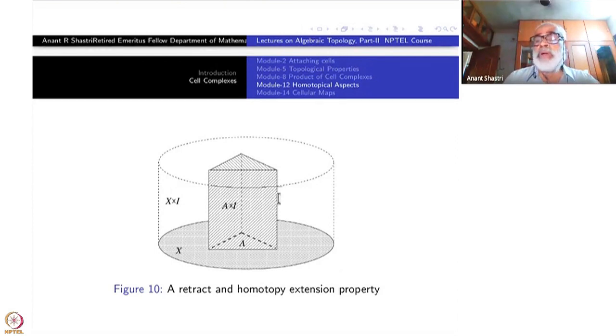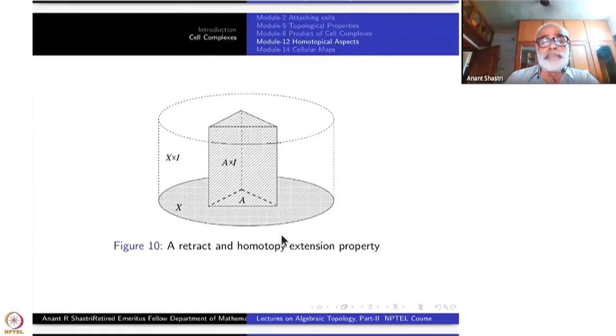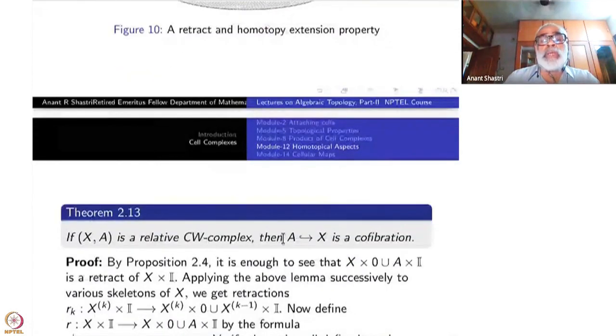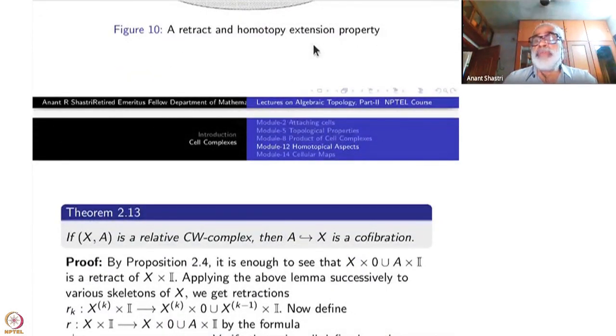This is the meaning: X×I can be strongly deformed into X×0 ∪ A×I. This happens whenever the inclusion map is a co-fibration, and conversely. Right now you can take this as a definition for co-fibration, because they are equivalent.